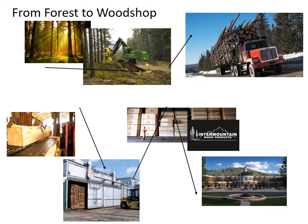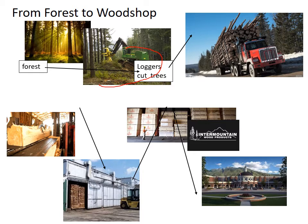This slide represents the way that we get our trees and lumber — it's not like it just shows up and grows at Intermountain Wood Products. We start with the forest, and from there loggers cut them. That's a pretty cool machine — you can see it cutting the tree and grabbing it at the same time, then loading it onto the truck where it is transported to a mill where they cut it up.